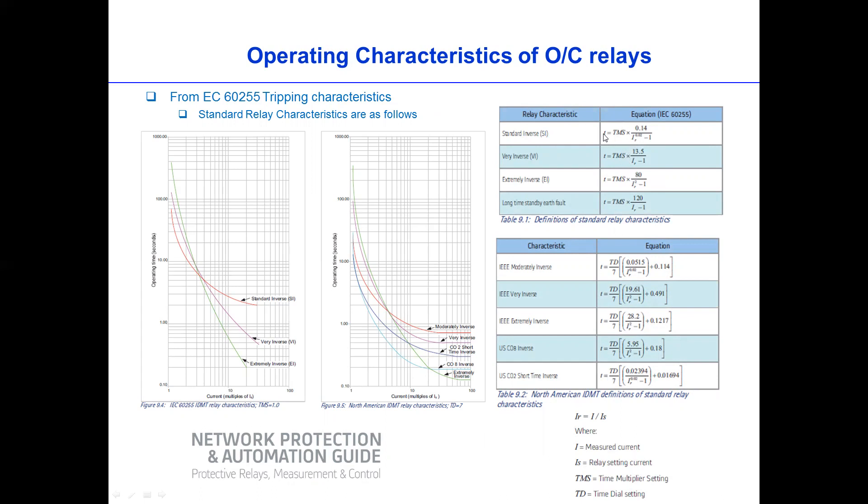And then these parameters are just an explanation to the parameter defined in the equation. So for example, T is time of the relay, TMS is time multiplier setting, and IR is I divided by IS, where I is the measured current during the fault, and IS is setting current or relay setting current.